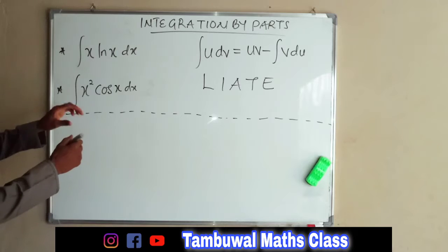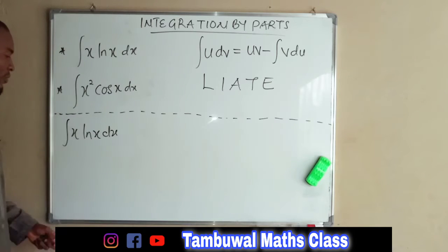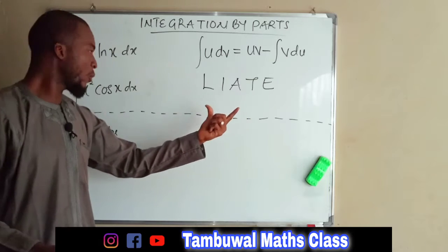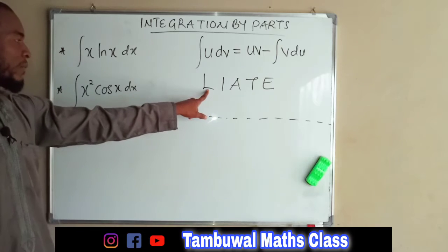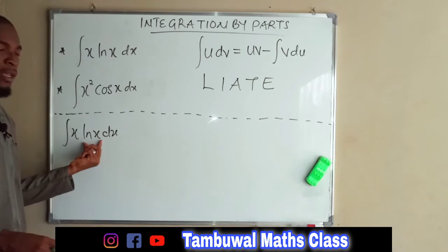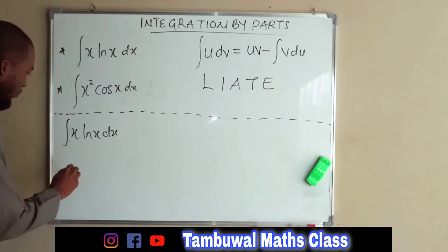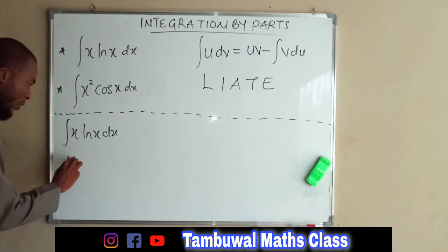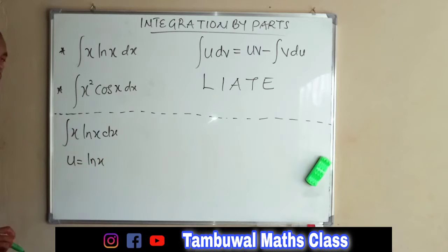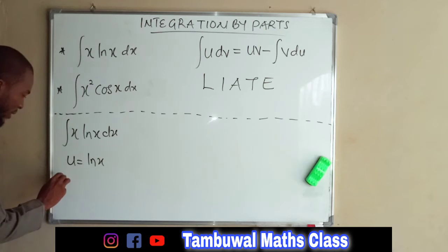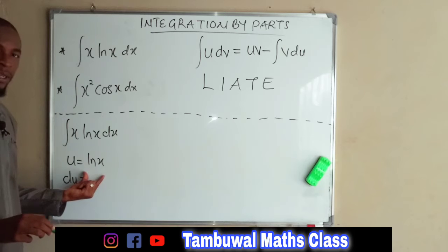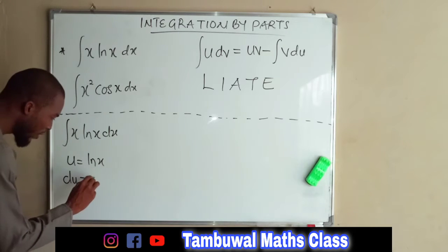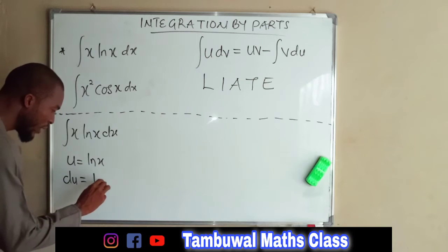So the first problem we are given here: following this acronym, we are going to decide which function to set as U. We have a log function here, so we are going to set U equal to the natural log of X. If we differentiate this, we obtain DU with respect to X. Differentiating natural log of X gives 1 over X.